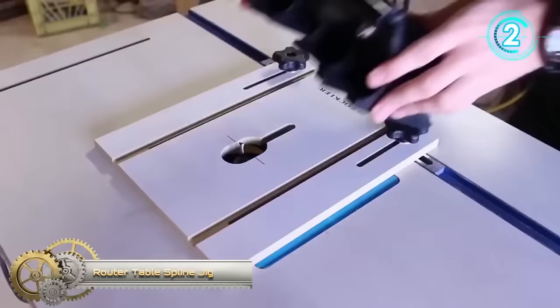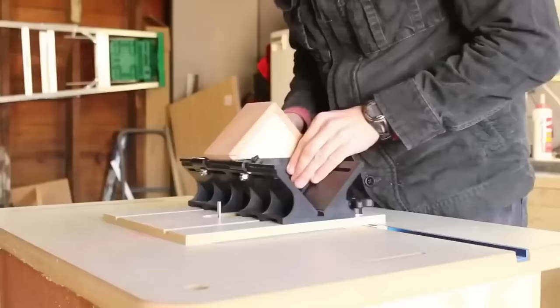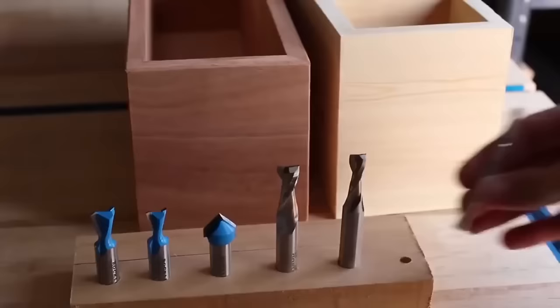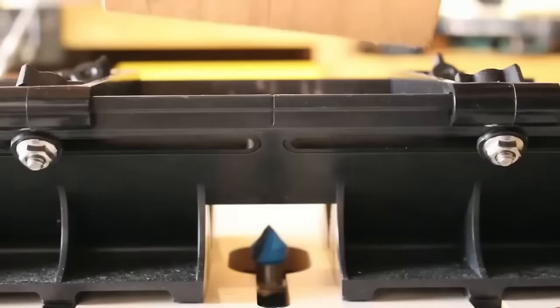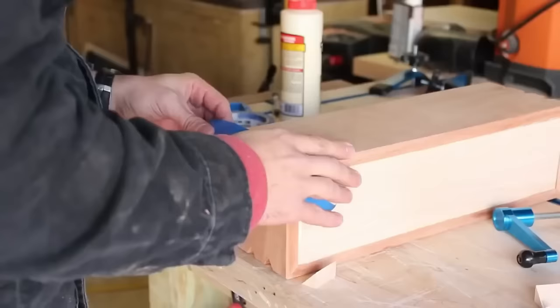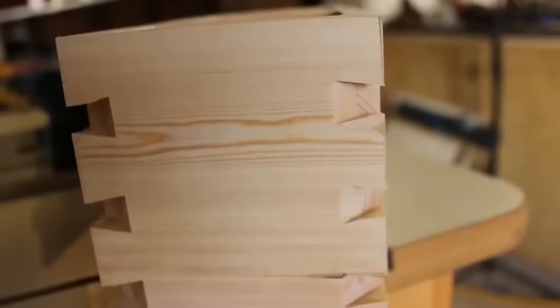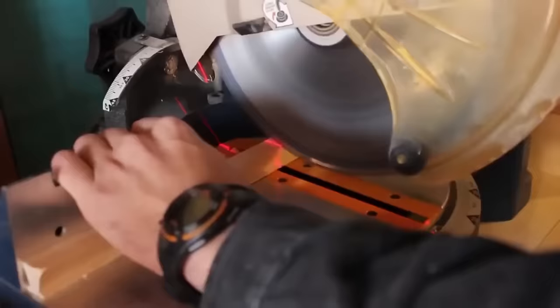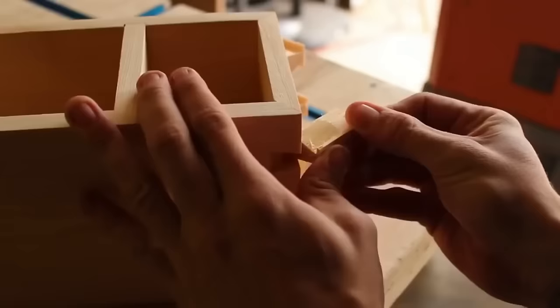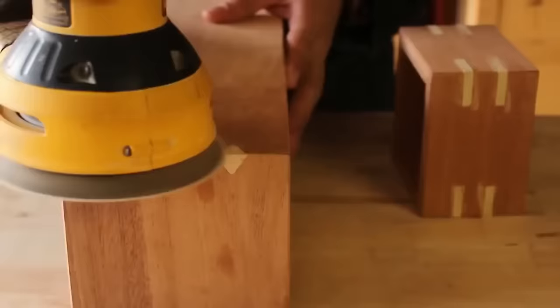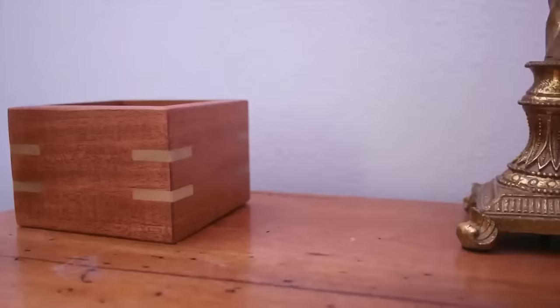A router table spline jig is a woodworking tool designed to facilitate precise spline cutting. Splines are slender strips of wood that enhance joint strength and can serve decorative purposes. Using this tool involves routing grooves in workpieces to accommodate the splines. To create these grooves, you place the workpiece in the jig and use a straight router bit. Afterward, glue the spline into the groove to reinforce the joint. Router table spline jigs vary in complexity with some suitable for single spline grooves and others capable of handling multiple grooves or different angles. These versatile tools make adding strength and aesthetics to woodworking projects more accessible.